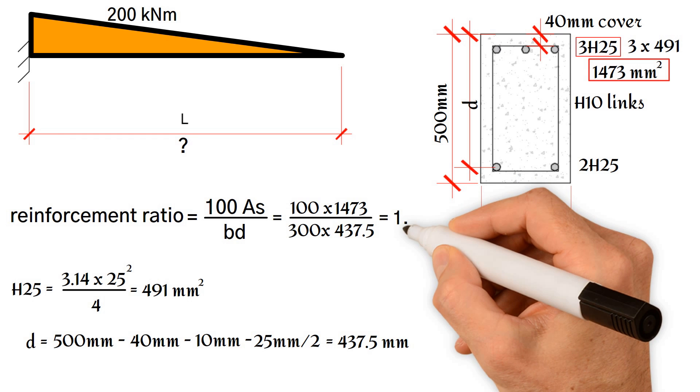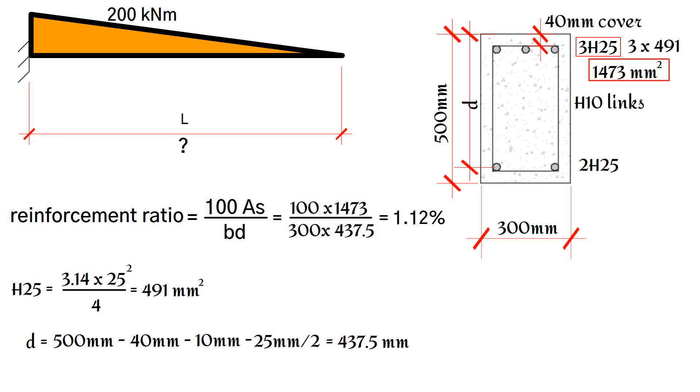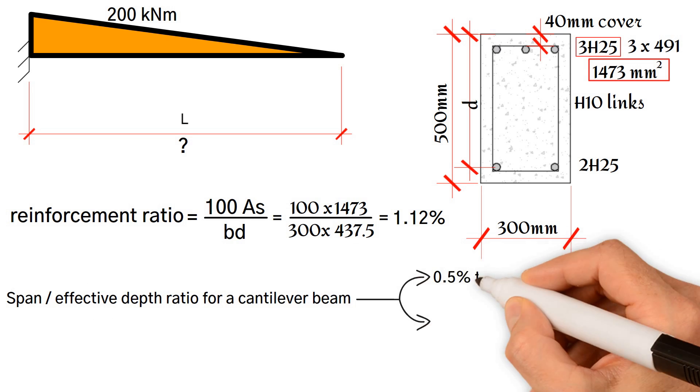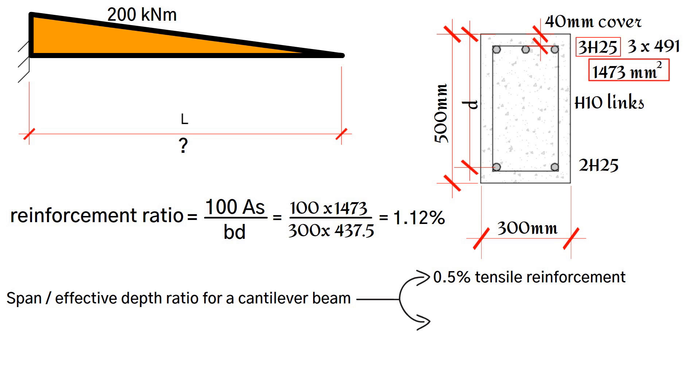This gives us a value of 1.12%. According to Eurocode 2, the span-effective depth ratio for a cantilever beam with 0.5% tensile reinforcement is 8, and the span-effective depth ratio for a cantilever beam with 1.5% tensile reinforcement is 6.